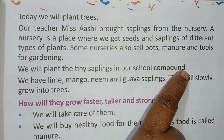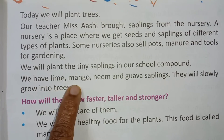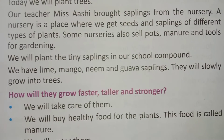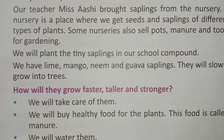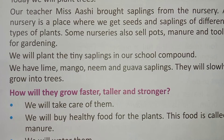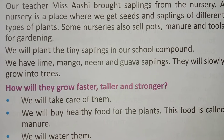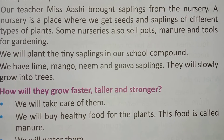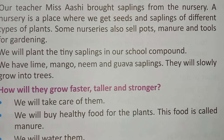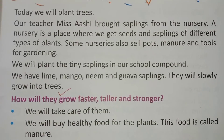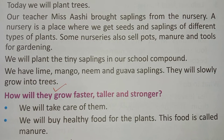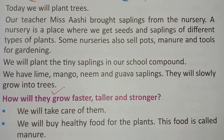They will plant the tiny saplings in their school compound. Rocky's group has lime, mango, neem, and guava saplings. Lime means lemon. These saplings will slowly grow into big trees after planting, and they will give us fruits. That's all for today. In our next class we will read the rest of the chapter. I hope you have understood. Thank you for watching this video. Bye bye, children!